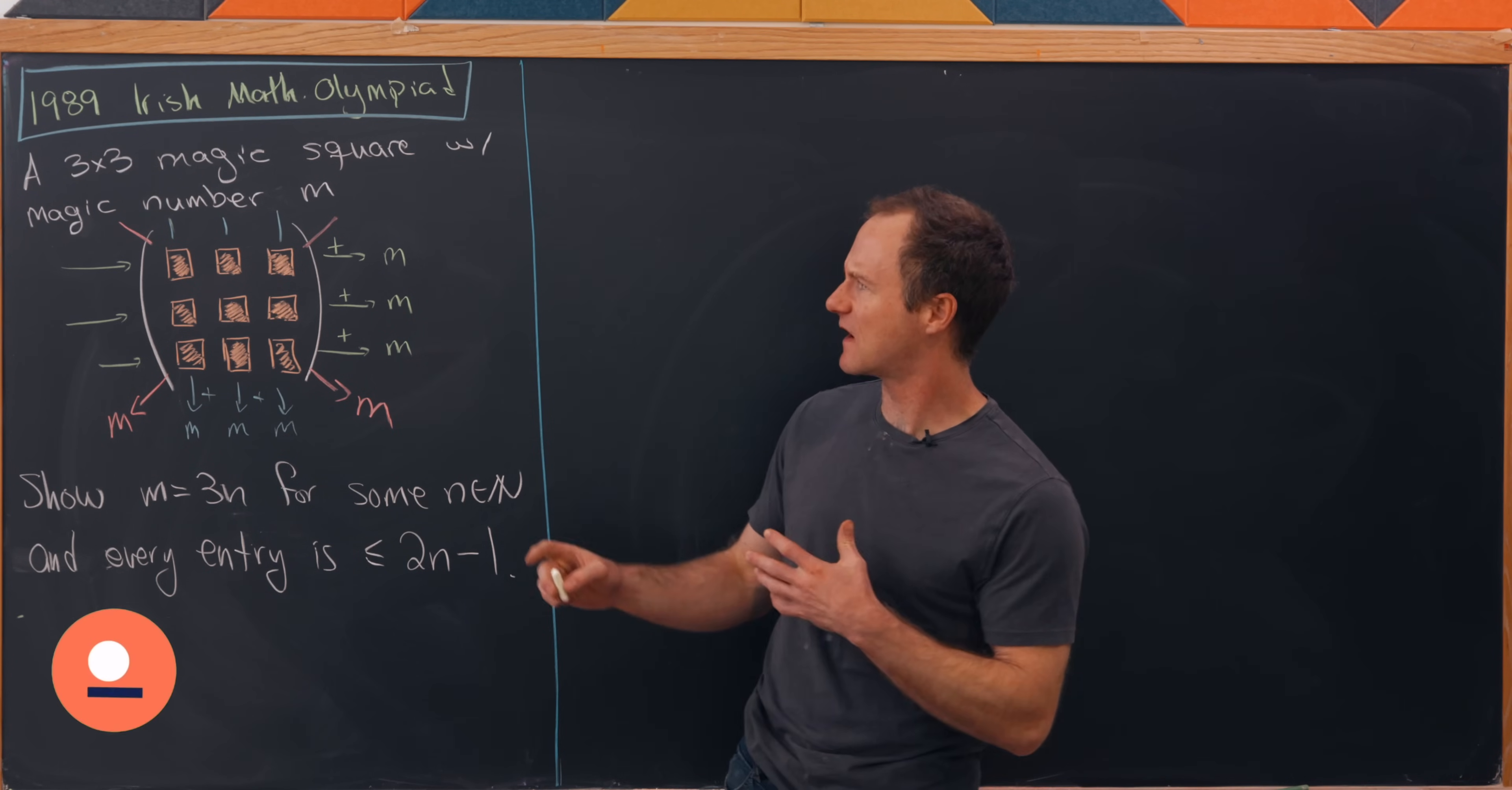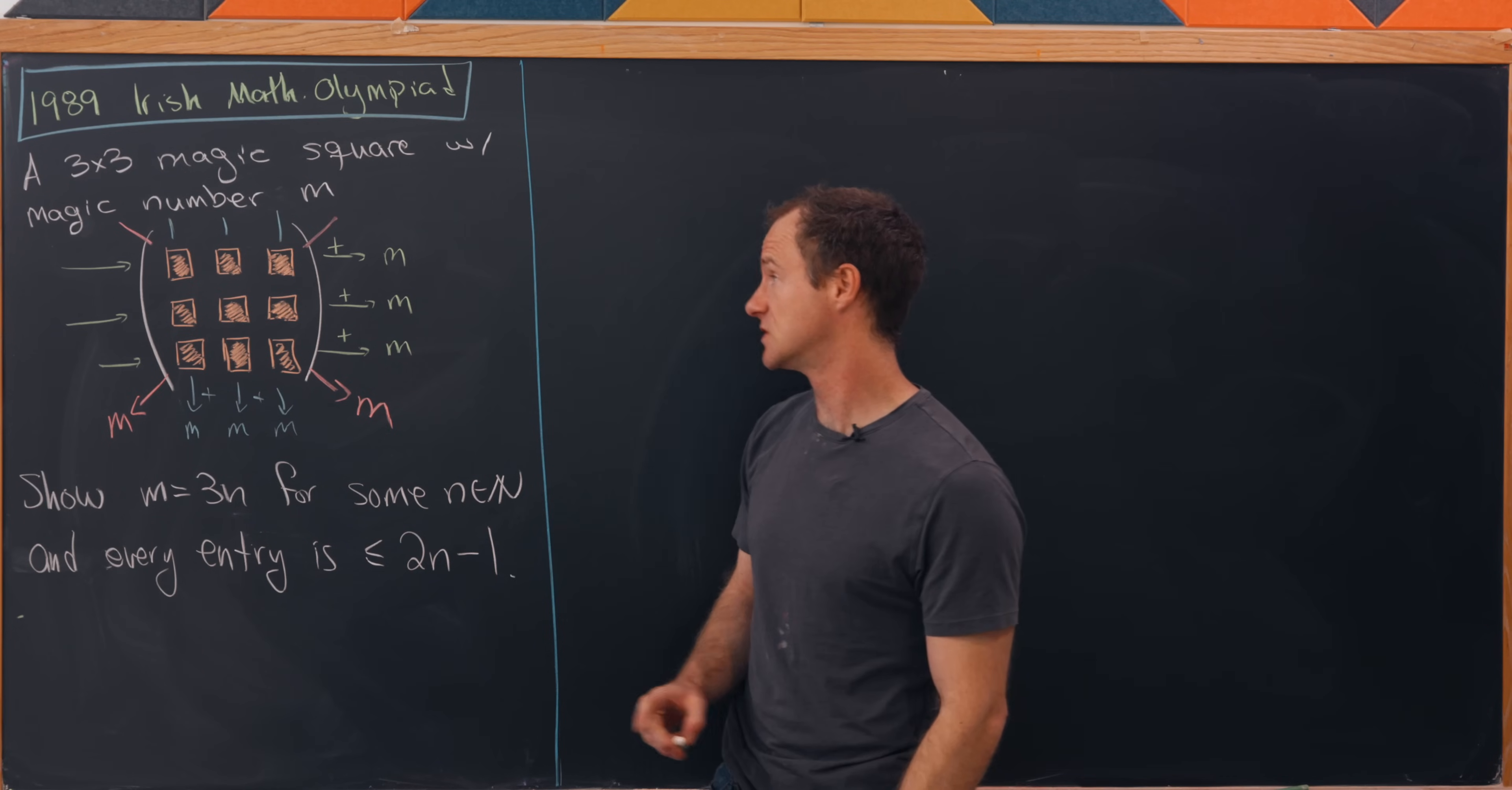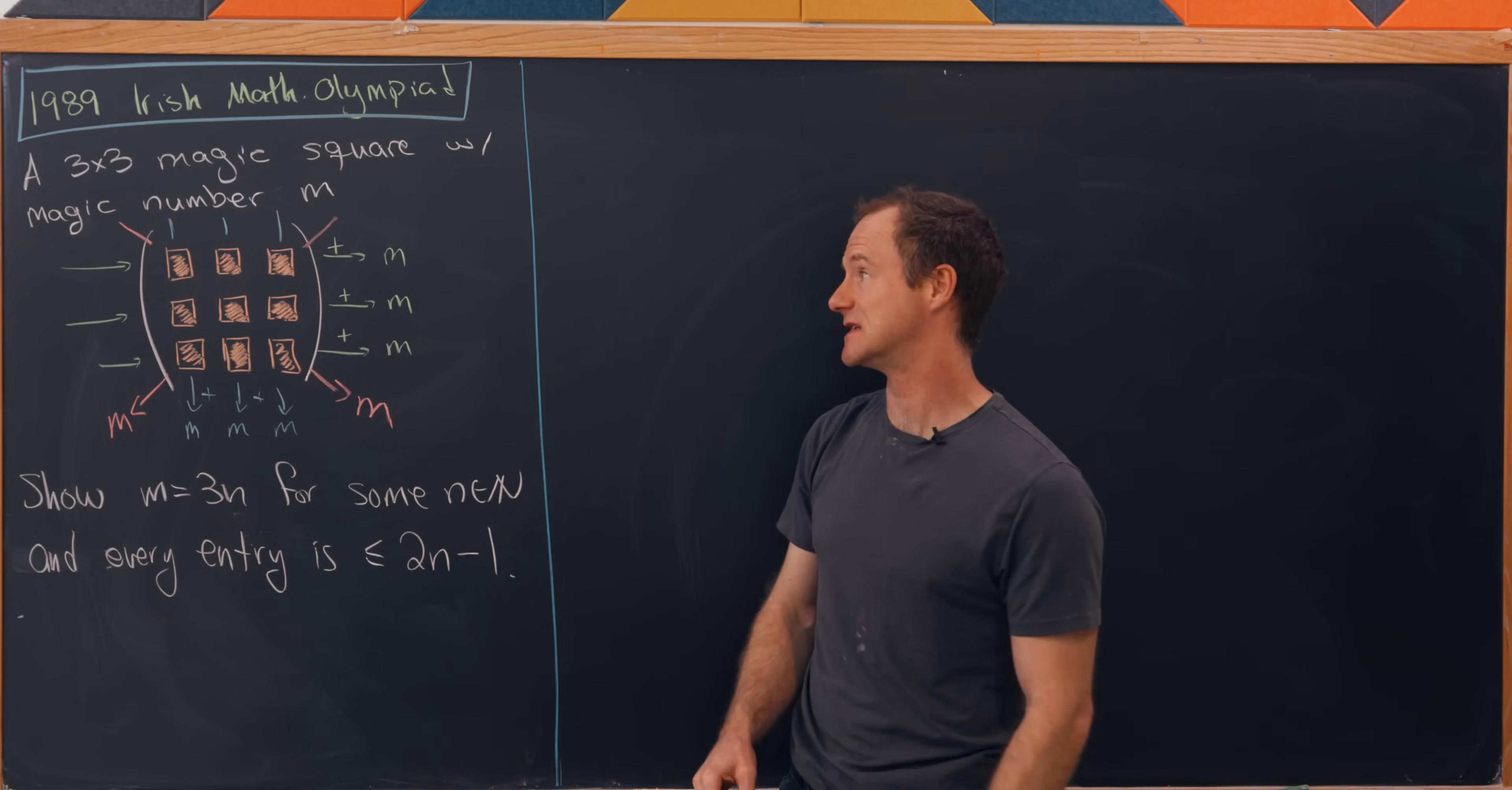Let's define a 3 by 3 magic square with magic number m to be a matrix built out of positive integers so that all of the rows add to m, all of the columns add to m, and both diagonals also add to m.